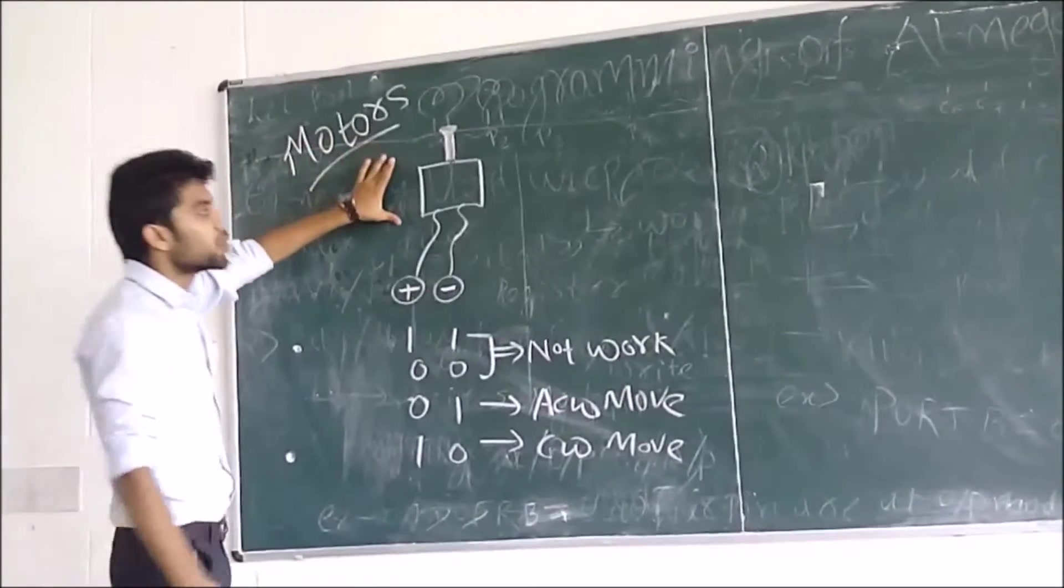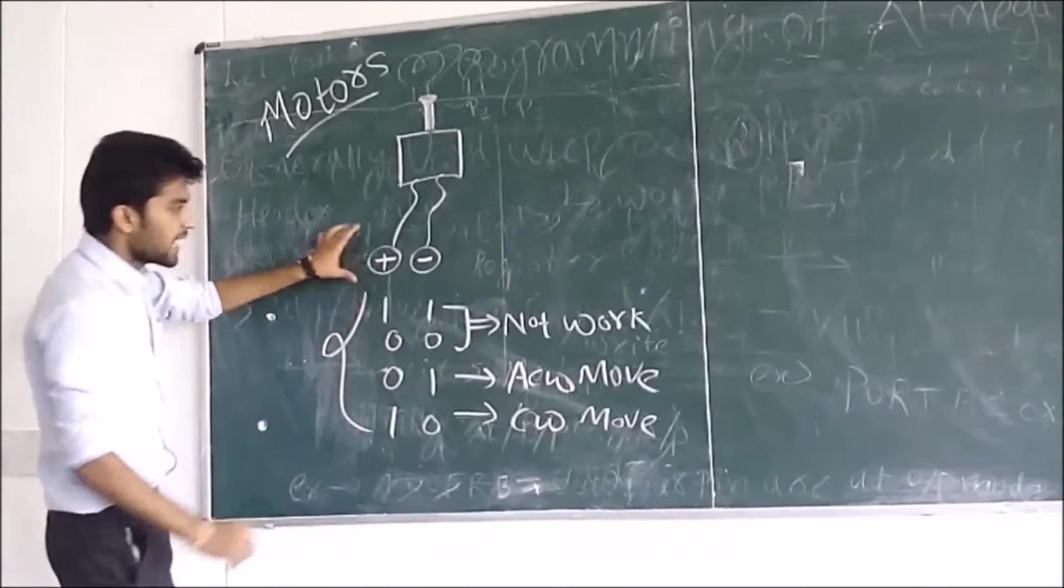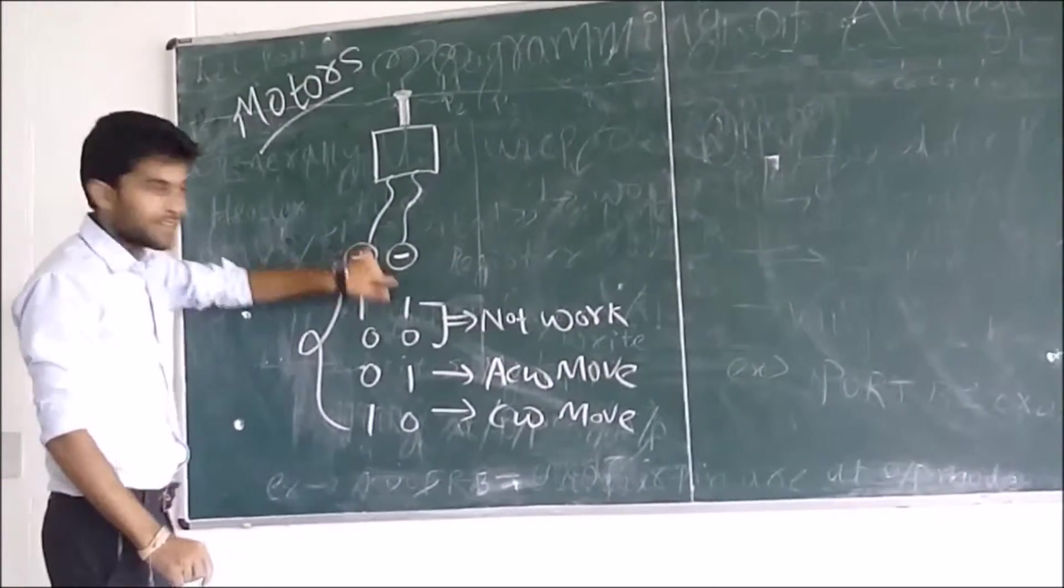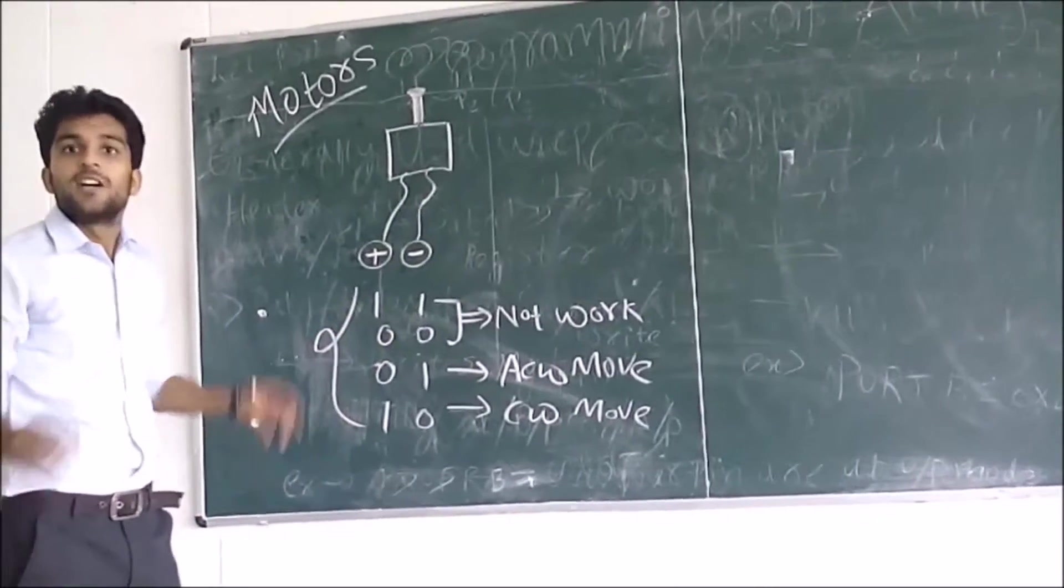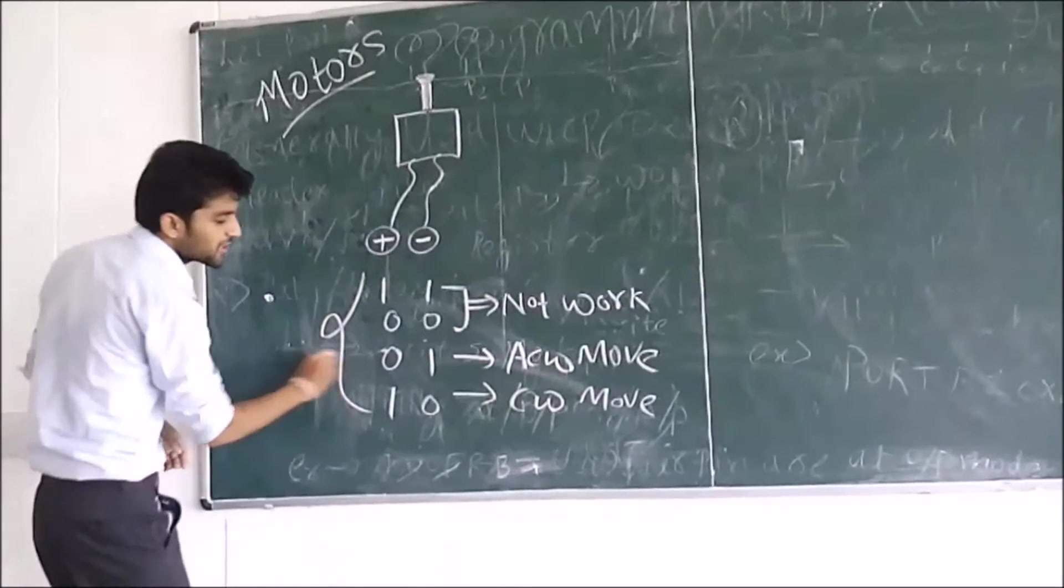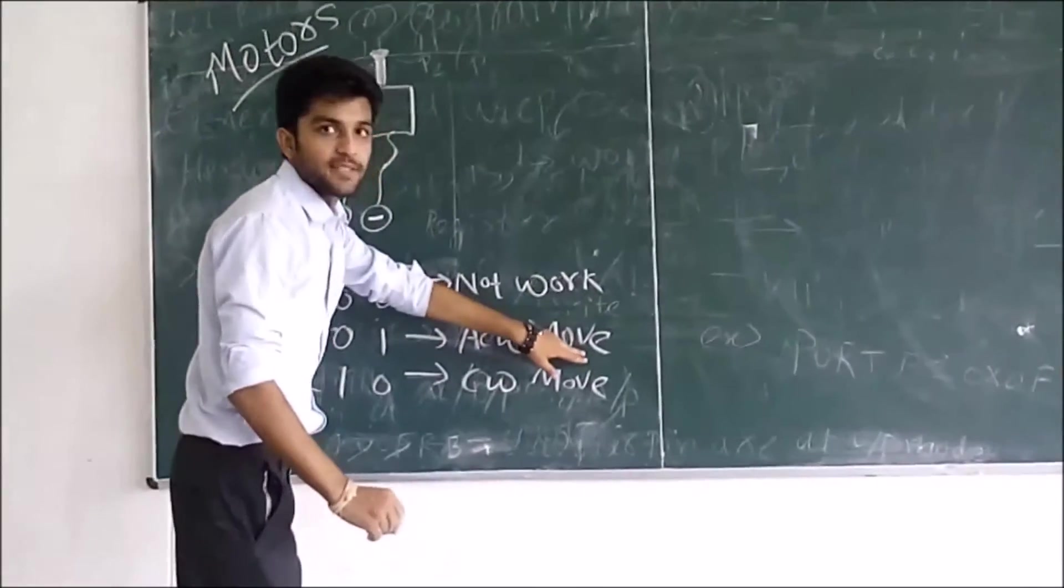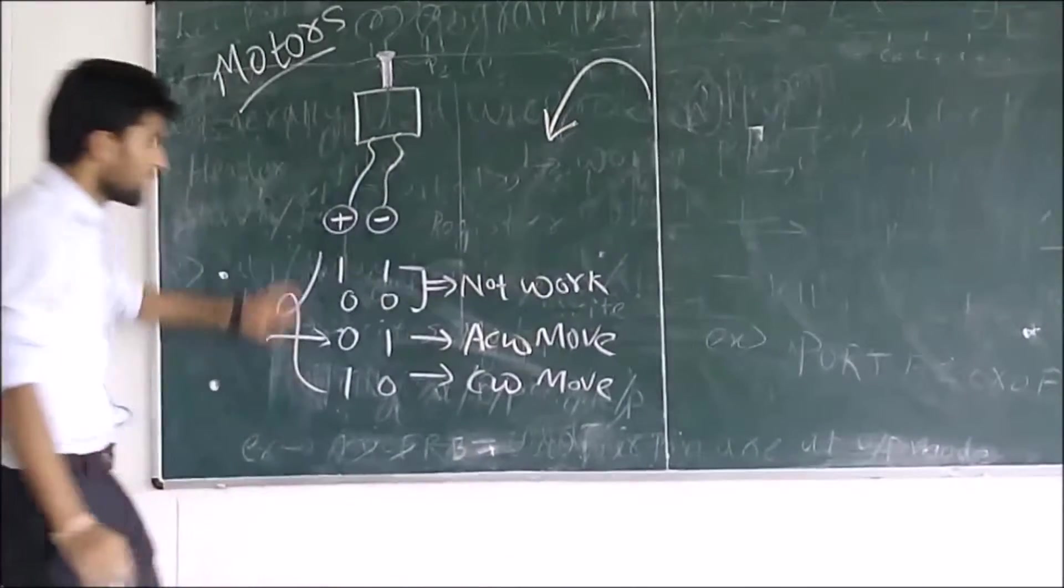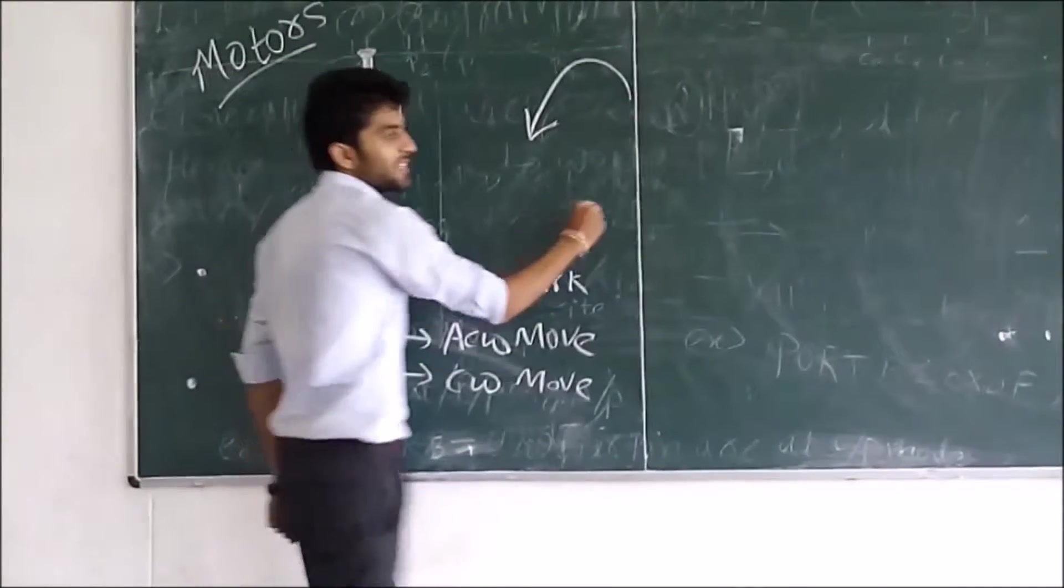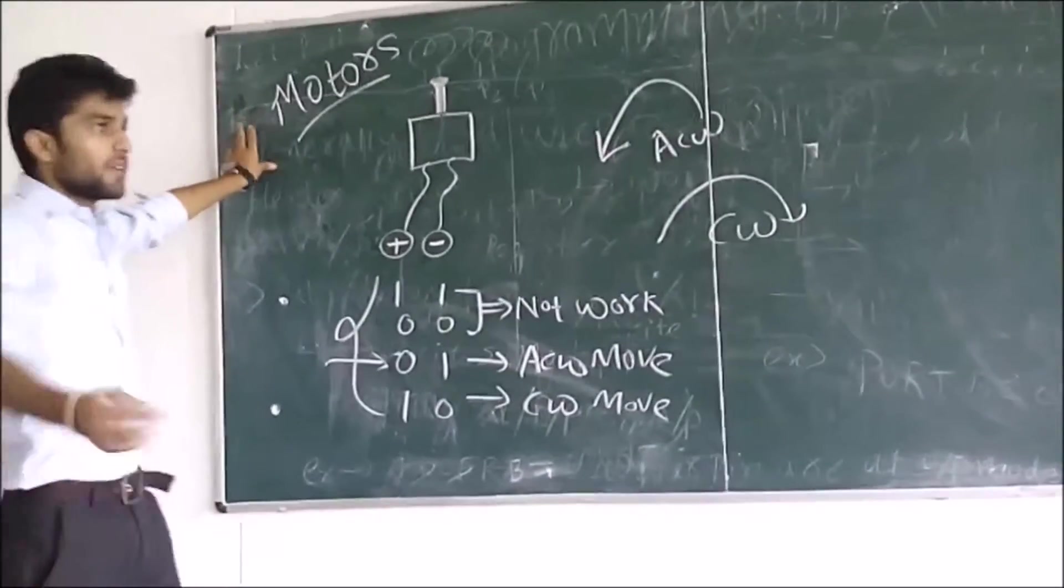So, now we will discuss about motors. This is the motor. Motors have positive terminal and negative terminal. There are four cases which can be done. If we provide positive as 1 and negative as 1, or positive as 0 and negative as 0, there is no potential difference. No circuit can work without any potential difference. So, the motor will not work. If we provide positive as 0 and negative as 1, then it will move in clockwise direction. And if we provide positive as 1 and negative as 0, then it will move in anticlockwise direction.